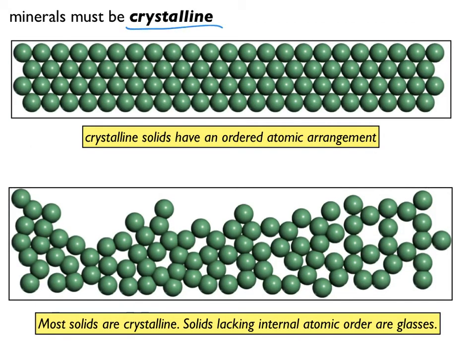Minerals must be crystalline. A solid that is crystalline has an ordered atomic arrangement, meaning it's completely predictable where in the internal structure of that mineral you might find a given element, because they are regularly and predictably ordered. A non-crystalline solid has no atomic order — the elements are randomly distributed and locked into place. All glasses are quenched very rapidly from a melt and therefore do not have the opportunity to form these ordered atomic arrangements, so they are not crystalline.